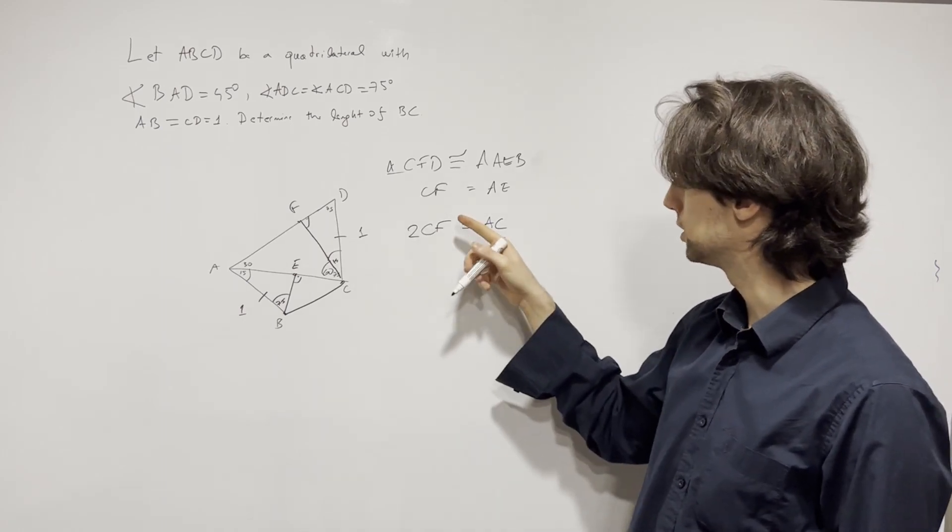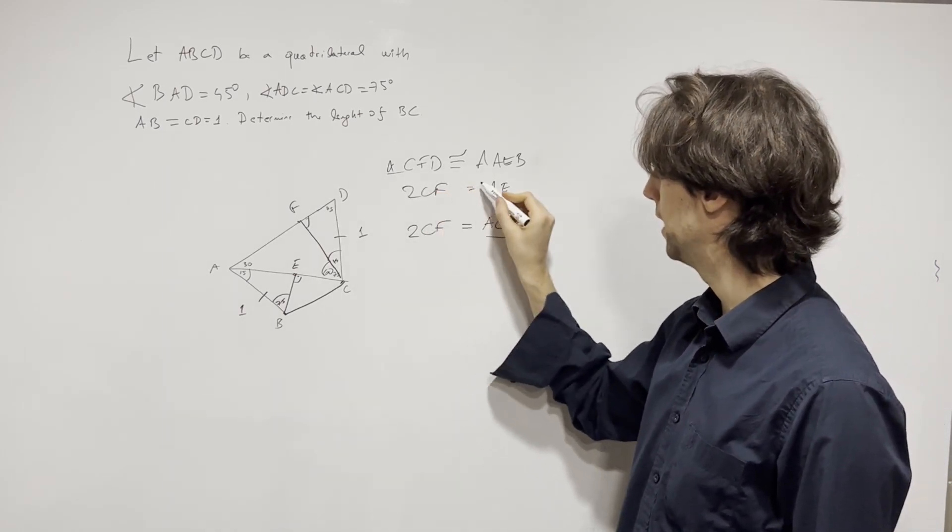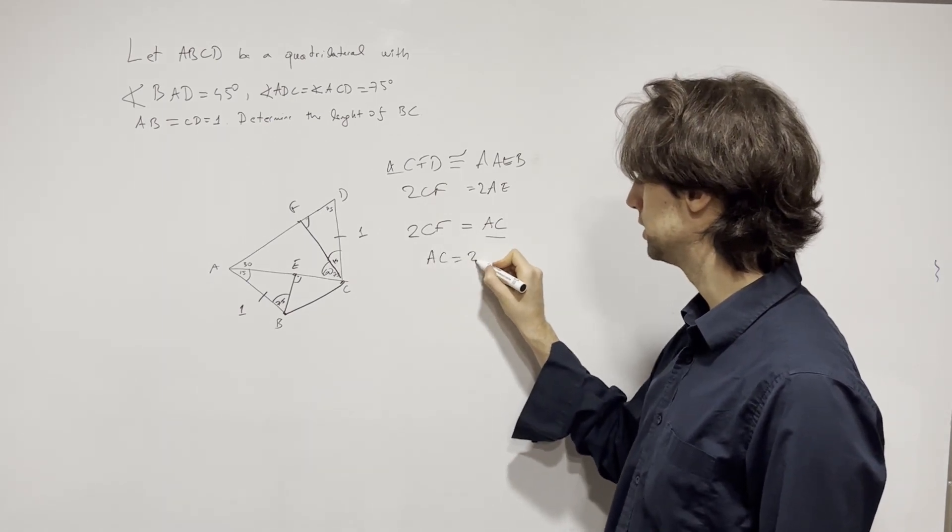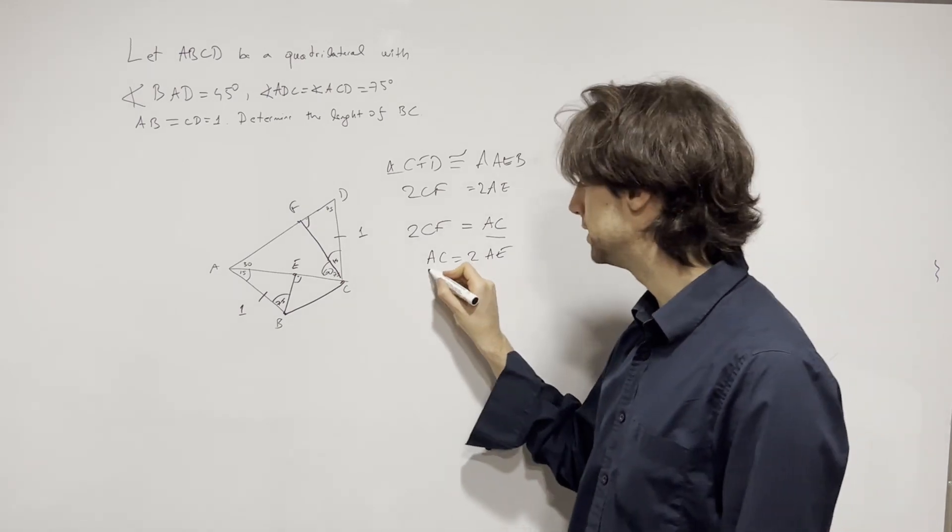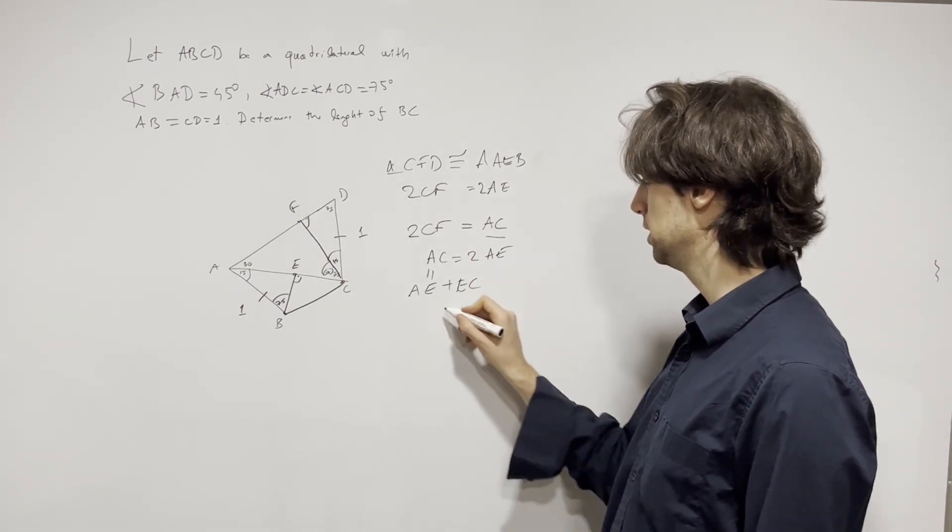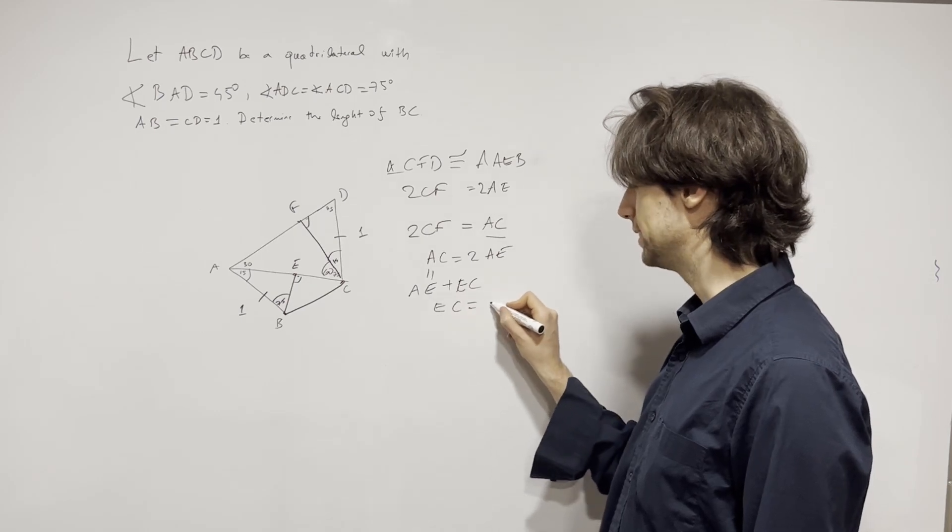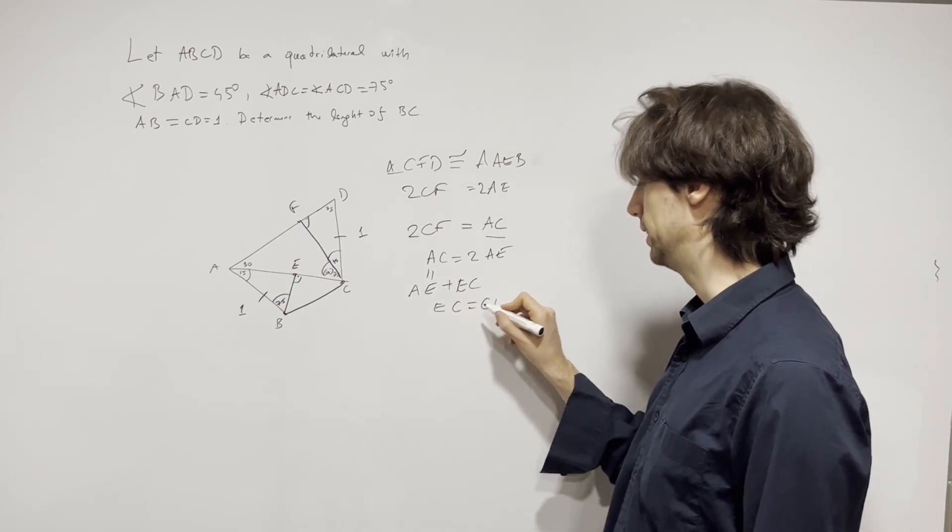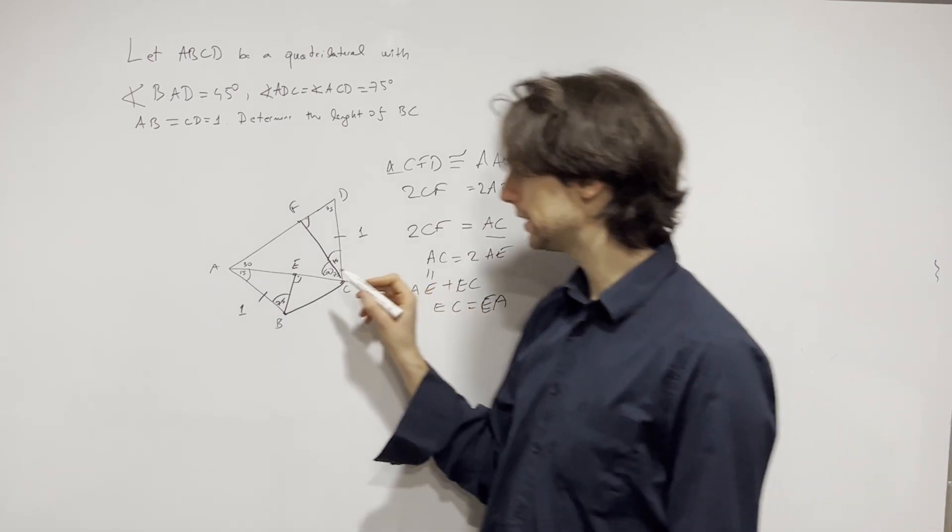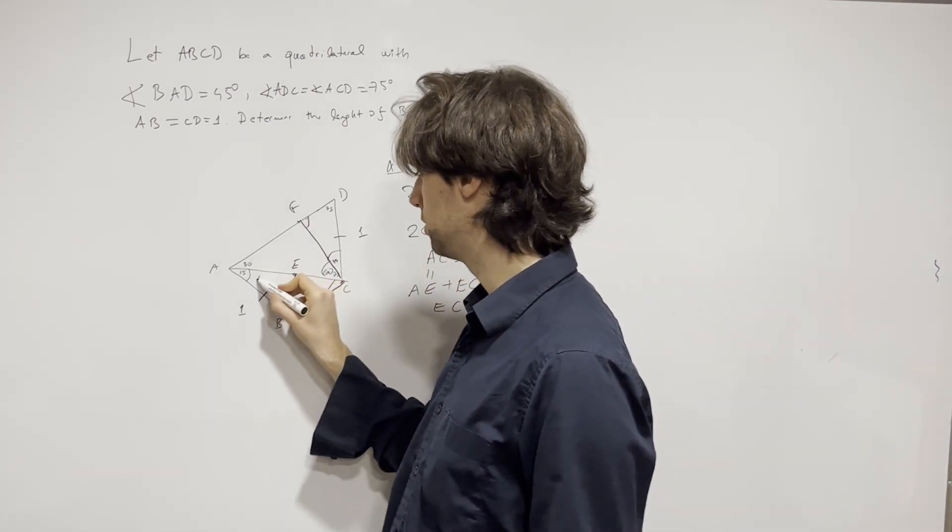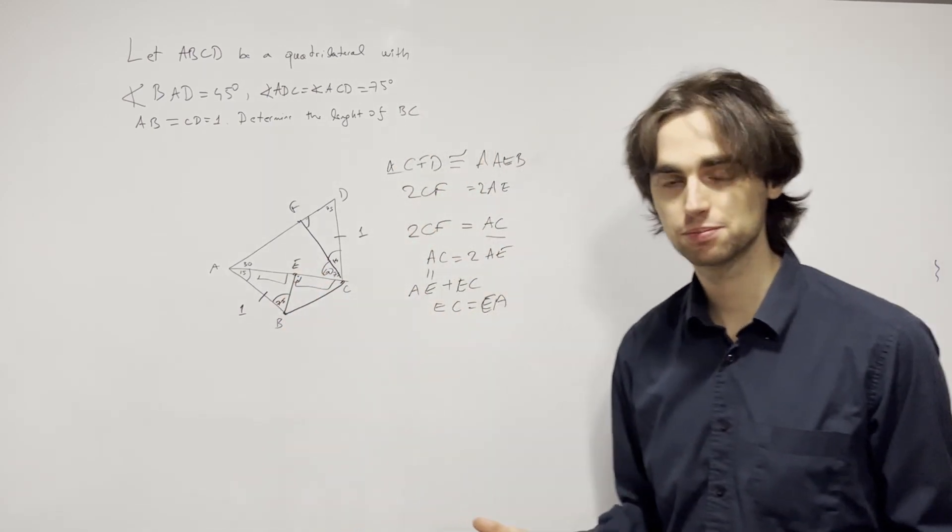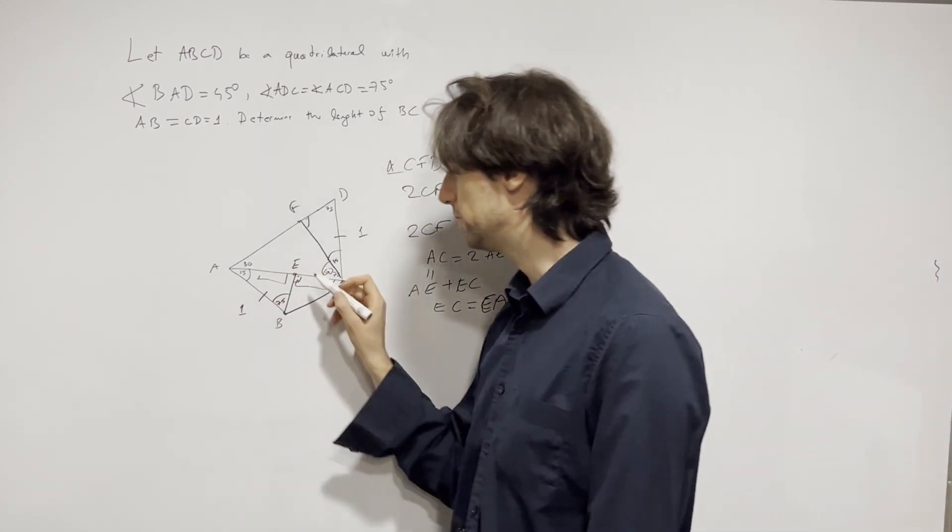Now if we just combine these two facts, we're going to get that AC is two times AE. Now AC is equal to AE plus EC, so we will get that EC is equal to EA. And now what does that tell us? That tells us that this is equal to this, so E is in fact the midpoint. And now we know it's a midpoint and has a 90 degree angle here.